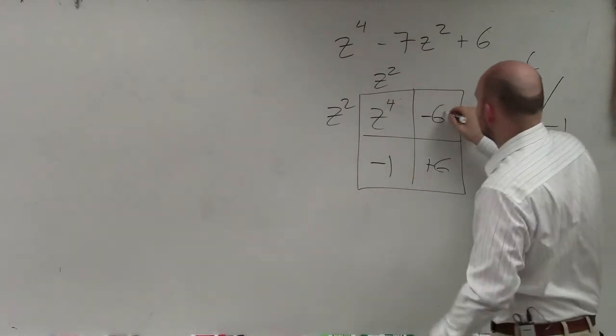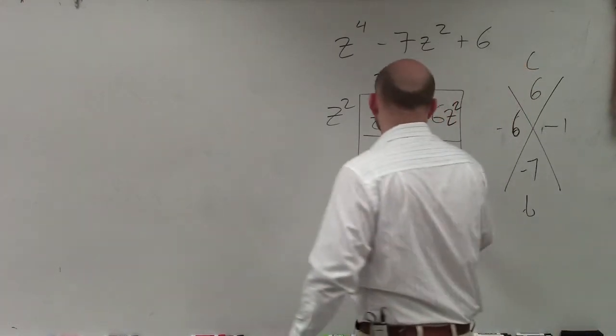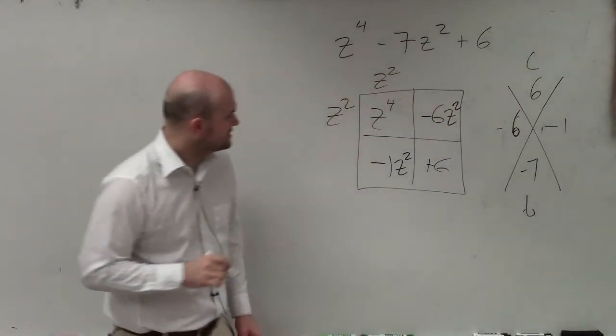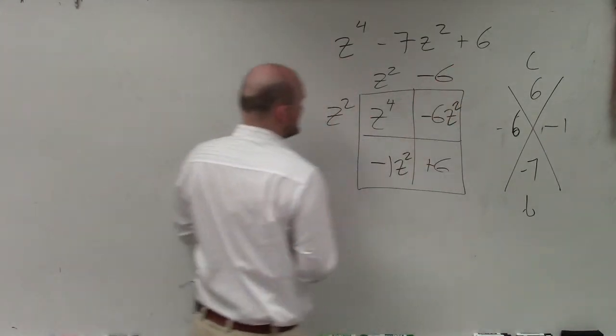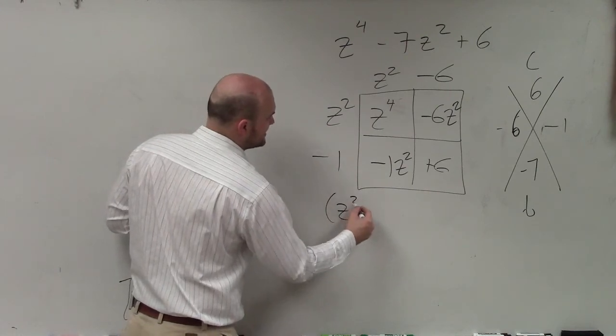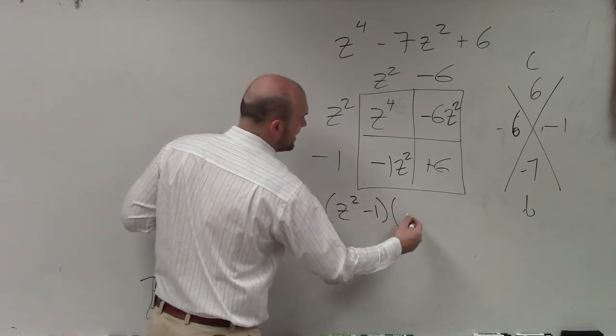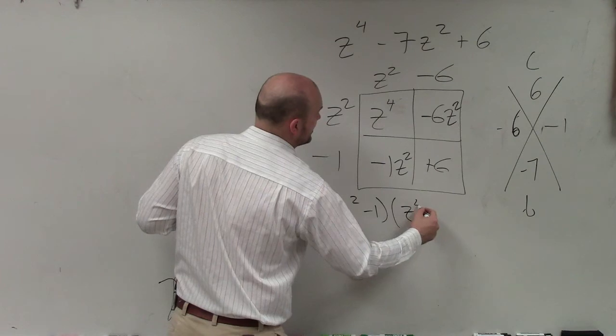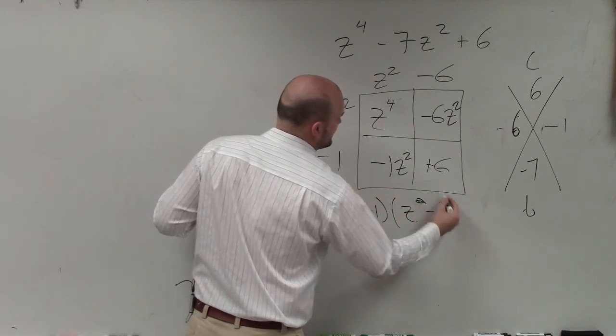So therefore, these side lengths are also going to be in the terms of z squared and z squared. So this will be minus six and minus one. So your factors are going to be z squared minus one times z squared minus six.